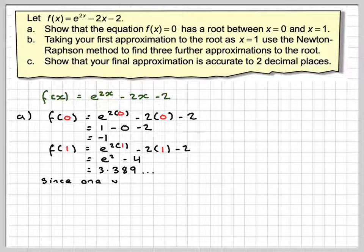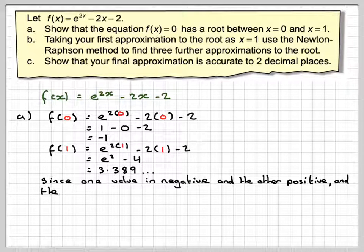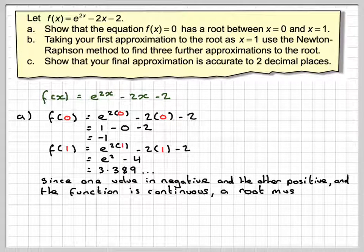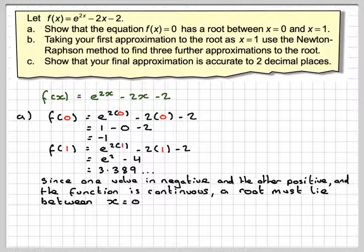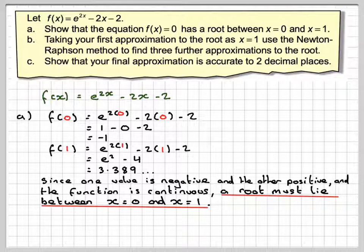And therefore, since it does do that, since one value is negative and the other is positive, a root must lie between x is 0 and x is equal to 1. Change of sign, function continuous, therefore there must be a root.